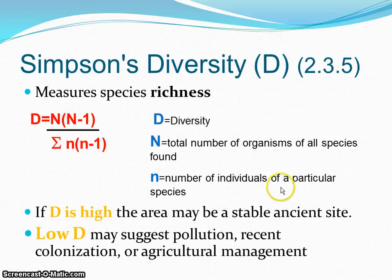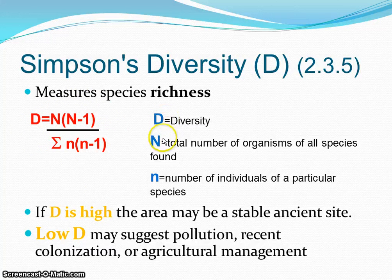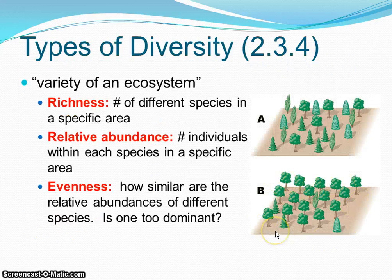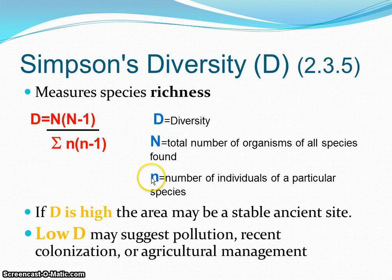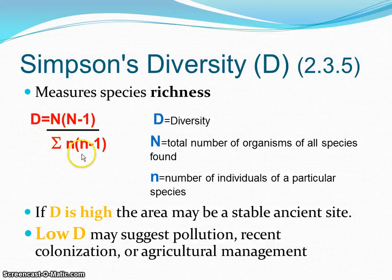We can actually put numbers to that — it's called Simpson's Diversity Index. Simpson's Diversity Index measures richness and evenness. It's a scary-looking equation, but we're going to practice it. D refers to diversity. The big N is the number of all of the different organisms, and the little n is going to be different depending on the particular species you're looking at. If your D is high, that means you have a stable site — mature, like a climax community in succession. If you have a low D, that suggests some sort of disturbance, whether it's pollution, human colonization, agriculture, or maybe a volcanic explosion.